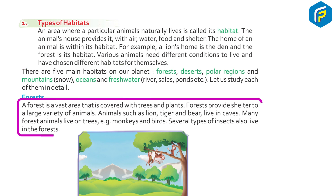A forest is a vast area covered with trees and plants. Forests provide shelter to a large variety of animals. Animals such as lion, tiger, and bear live in caves. Many forest animals live on trees — for example, monkeys and birds. Several types of insects also live in the forest.